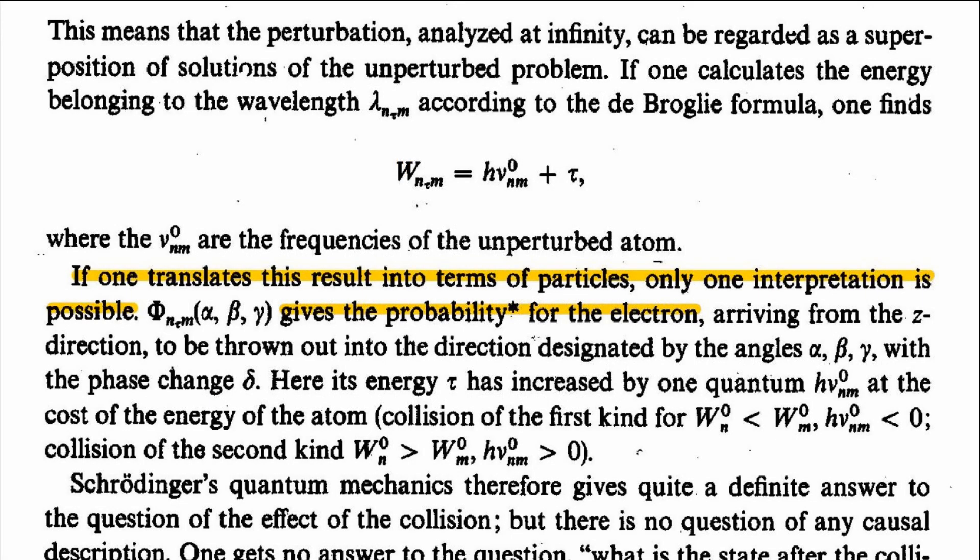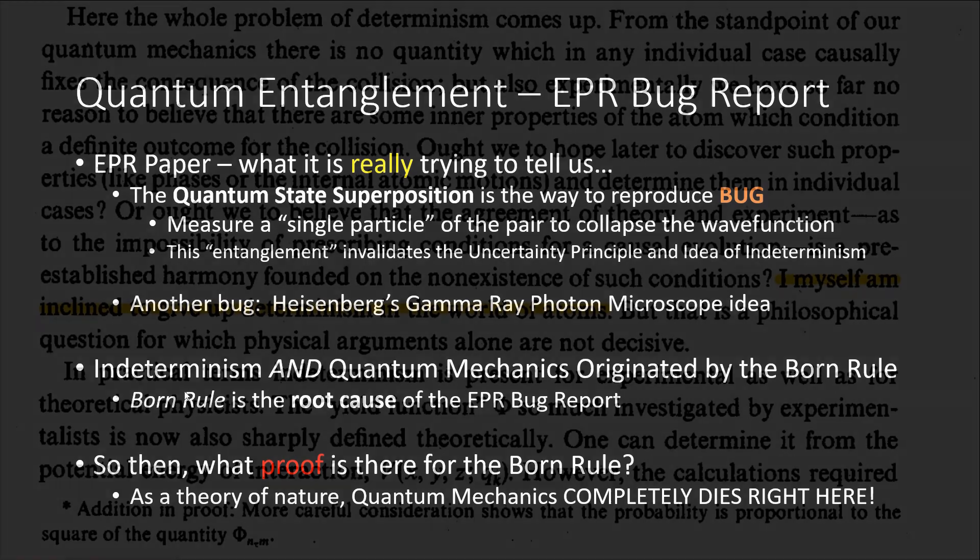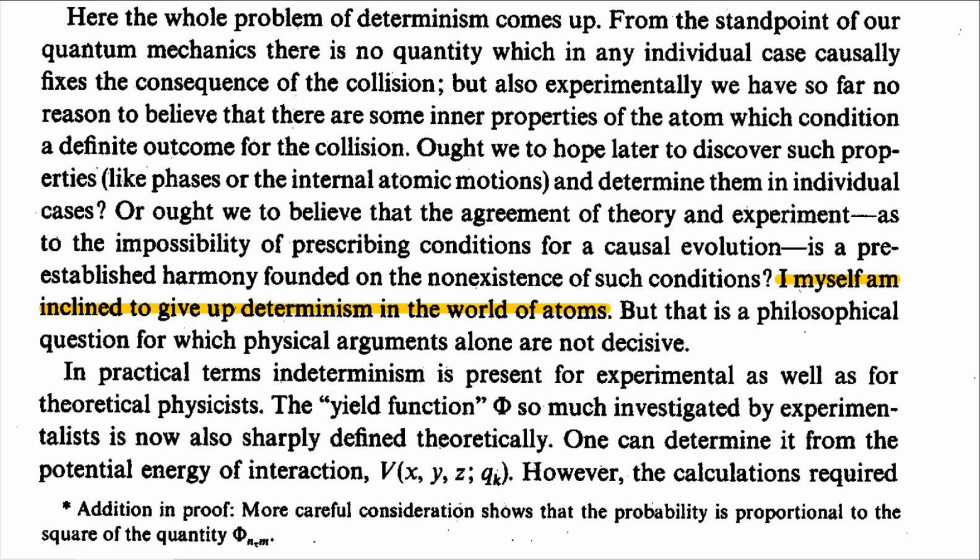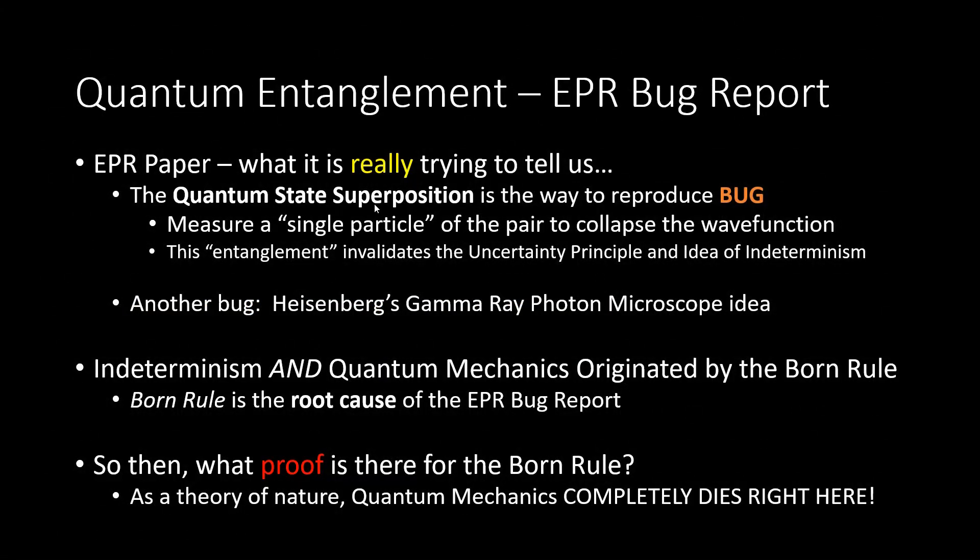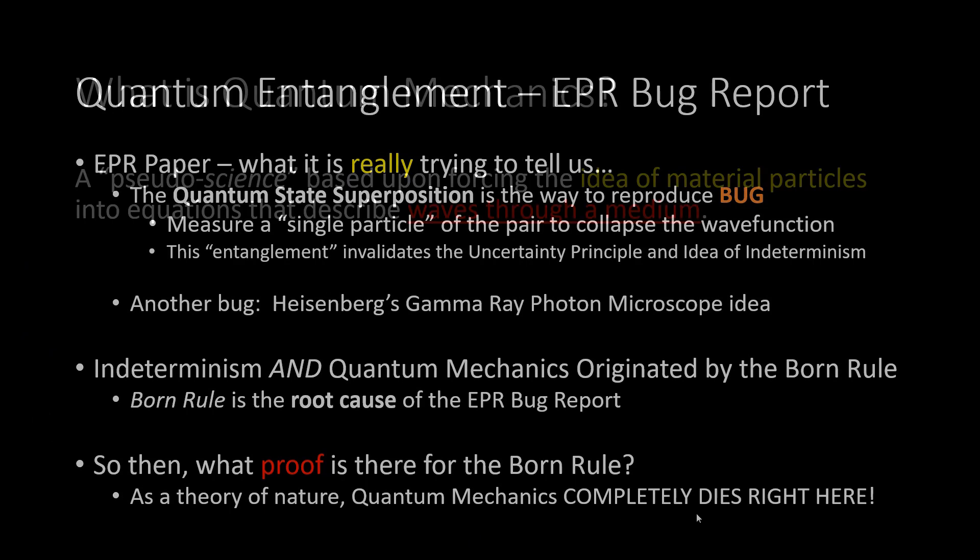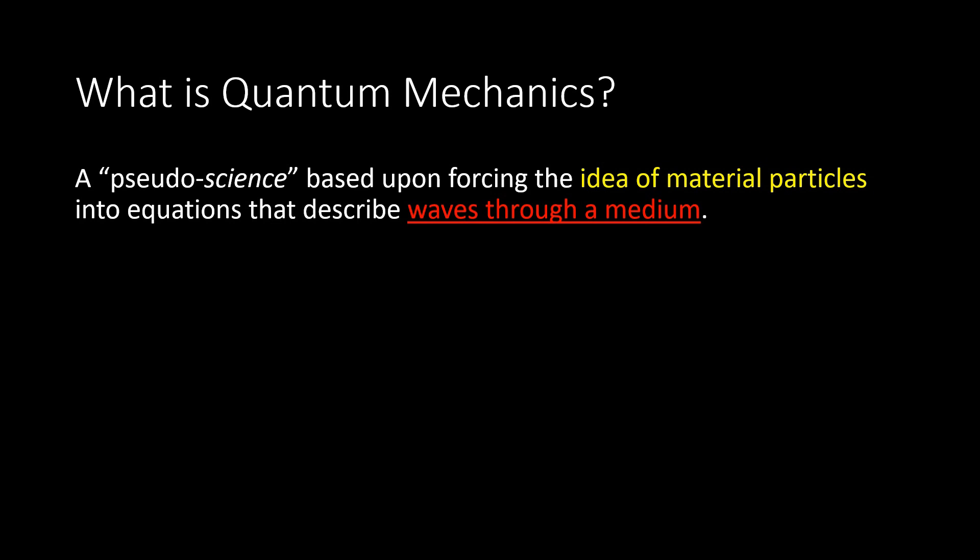Max Born hijacked Schrödinger's wave mechanics equation, then attached his own meaning of probability and indeterminism to that equation. It was that idea that created quantum state superposition, which is not real. So the EPR paper exposed all of these issues, and completely shuts down quantum mechanics. And finally, quantum mechanics is a pseudoscience based upon forcing the idea of material particles into equations that describe waves through a medium. And thanks for listening.